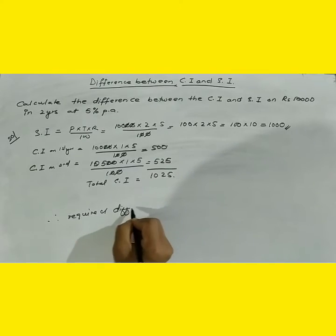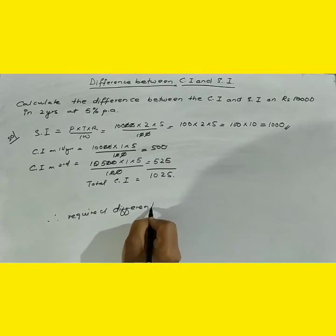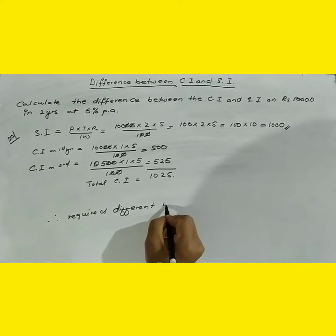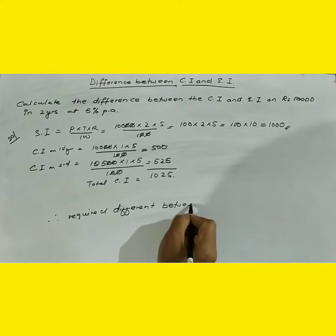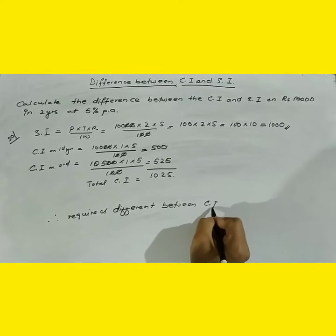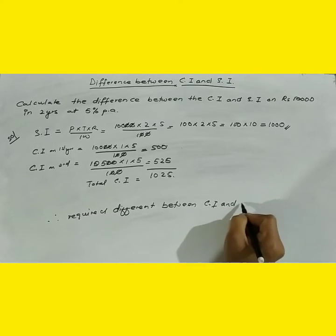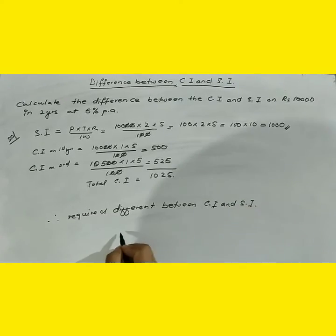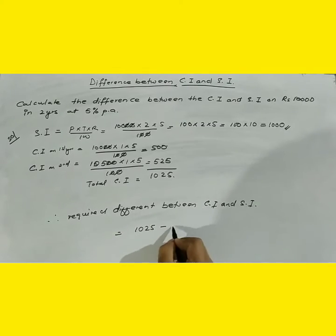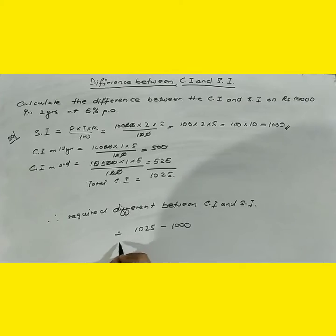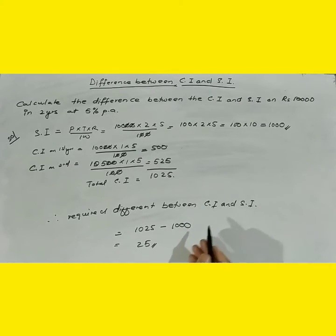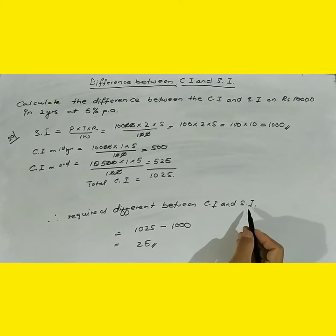between compound interest and simple interest equals to 1025 minus 1000 equals to 25. And this is the difference between compound interest and simple interest on principal of 10,000 for 2 years